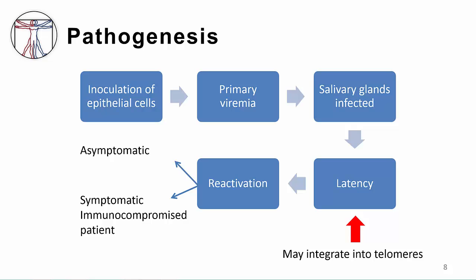Infection occurs via inoculation of epithelial cells with subsequent primary viremia, as shown in the figure. HHV6 uses CD46 as a cell receptor, which is widely expressed on nucleated cells. Salivary glands are infected during primary viremia. Persistent and asymptomatic infection can occur in the salivary glands, thus facilitating transmission to others, which is probably why we see such high seroprevalence rates. After primary infection, the virus establishes latency in monocytes, macrophages, and possibly other sites like the central nervous system.